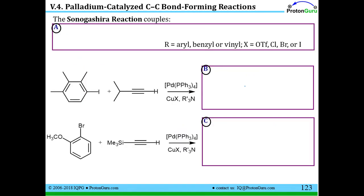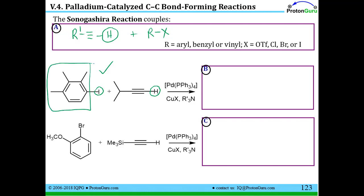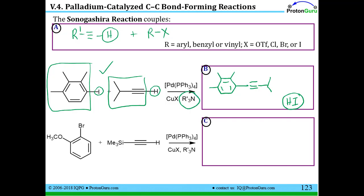You can also couple an alkyne to an aryl halide in what is called the Sonogashira reaction. The Sonogashira reaction couples a terminal alkyne by taking its terminal hydrogen away with an R group bearing a leaving group. The identities of R and the leaving group resemble the same ones we saw for the Heck reaction. In this example, we identify the leaving group and find the terminal site of the alkyne. We draw in the benzene ring with three methyl groups, and attached to that position will be the isopropyl-substituted alkyne that has lost its terminal H. The H and the I come off, and because you've made a strong acid, an amine base is often added.